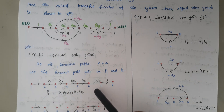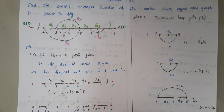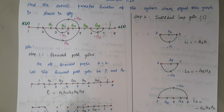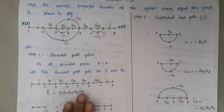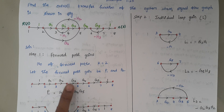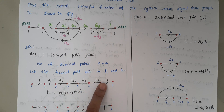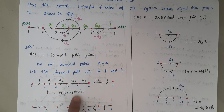Now we calculate the forward path gain. You simply multiply the branch values along the path: 1 × g1 × g2 × g3 × g4 × g5 × 1. This is the first forward path gain, represented as P1.